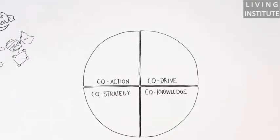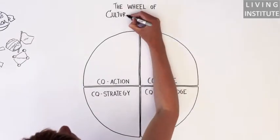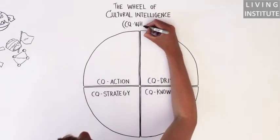To do that, we need to break down cultural intelligence into four focus areas. We call that the wheel of cultural intelligence, or just the CQ wheel.